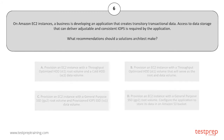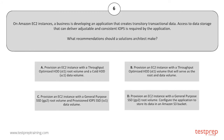Your options are: A. Provision an EC2 instance with a throughput-optimized HDD root volume and a cold HDD data volume. B. Provision an EC2 instance with a throughput-optimized HDD volume that will serve as the root and data volume. C. Provision an EC2 instance with a general-purpose SSD root volume and a provisioned IOPS SSD data volume. D. Provision an EC2 instance with a general-purpose SSD root volume and configure the application to store its data in an Amazon S3 bucket.